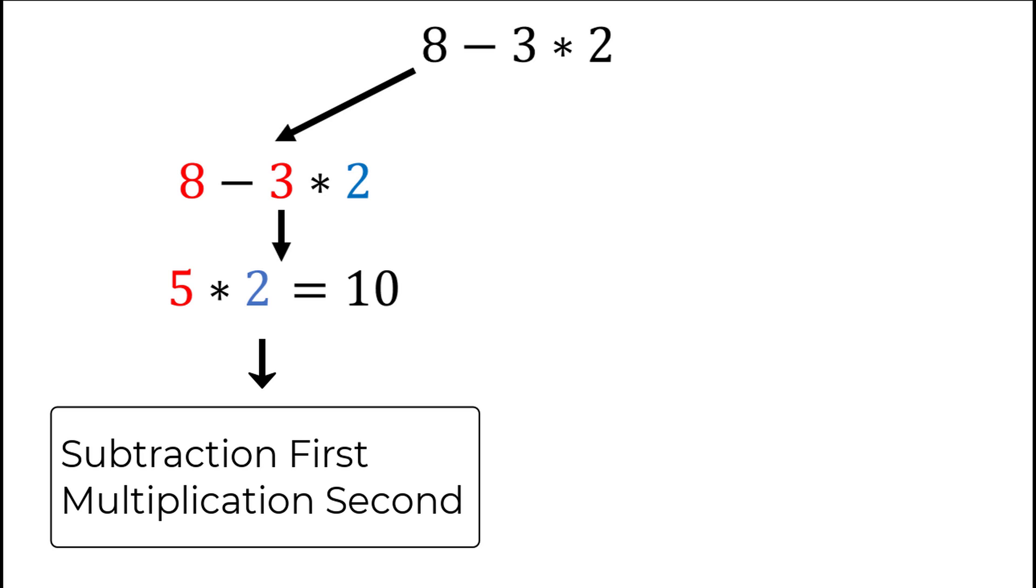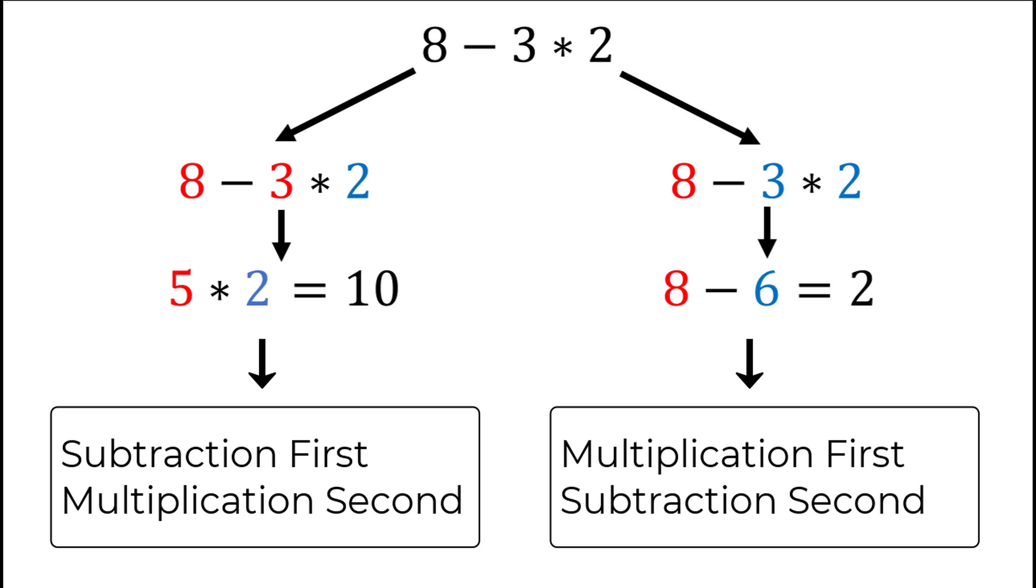Another way could be to do the multiplication first. 3 times 2 to get 6 and then take 8 minus 6 which would give you 2. We multiplied 3 times 2 first and then subtracted our answer from 8. Our order of operations was multiplication and then subtraction.